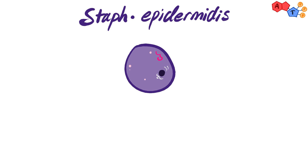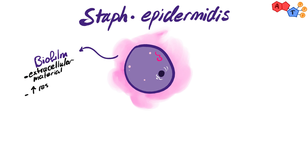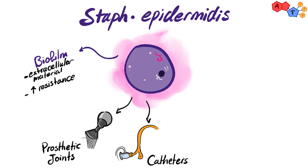Now let's talk about staph epidermidis. Staph epidermidis can produce a biofilm layer, which is an extracellular material irregularly organized to protect the bacteria, making it more resistant to being washed off by regular means and to some antibiotics as well. That's why it's usually related to implants, such as a prosthetic joint or a catheter.